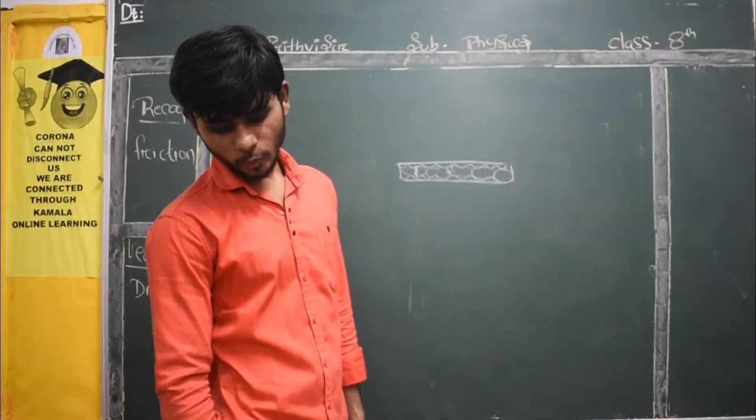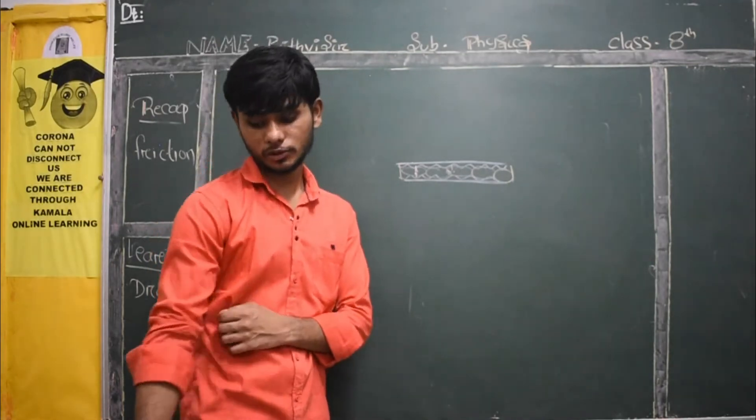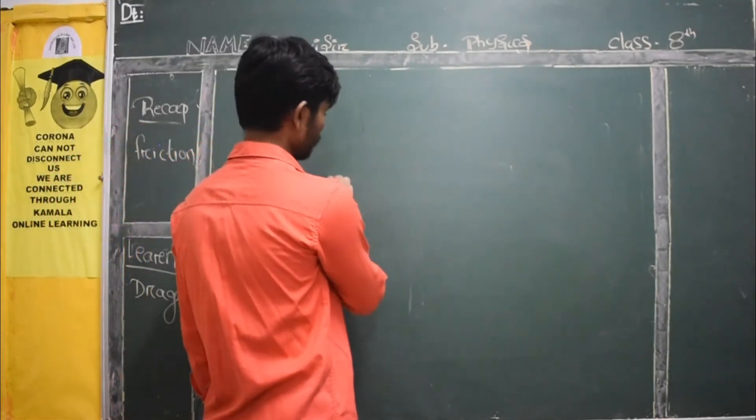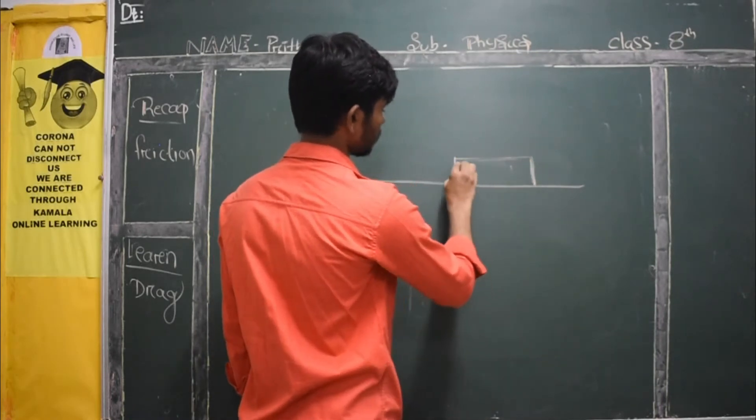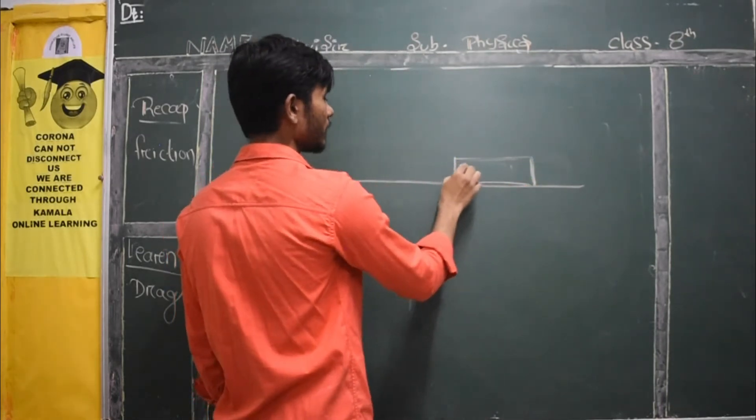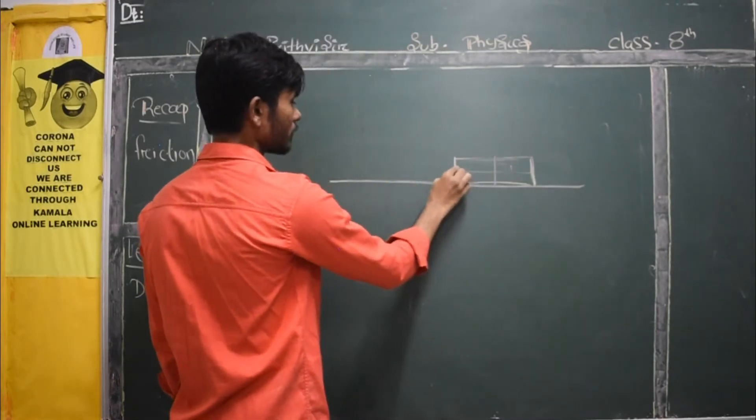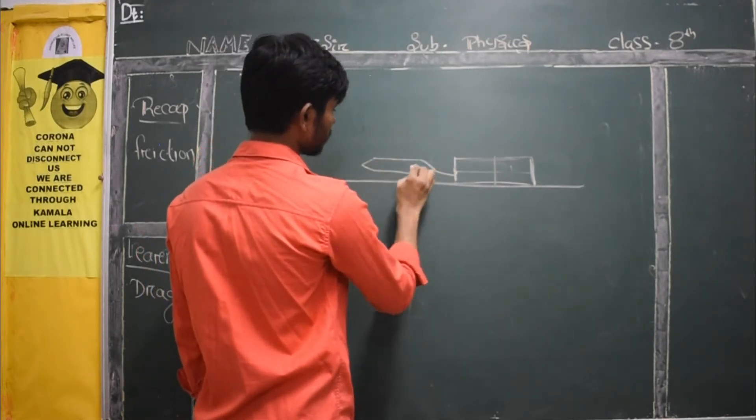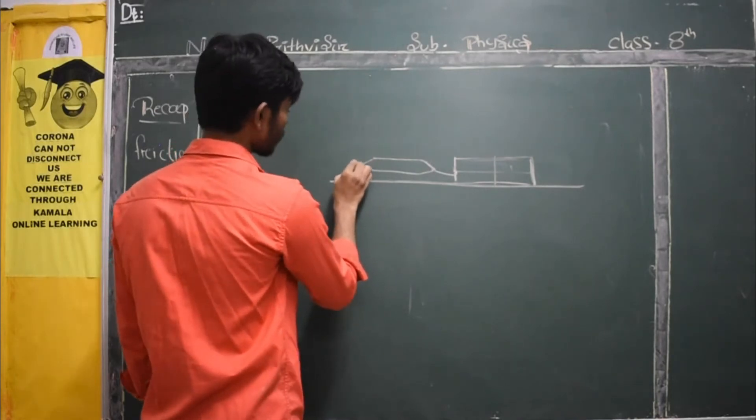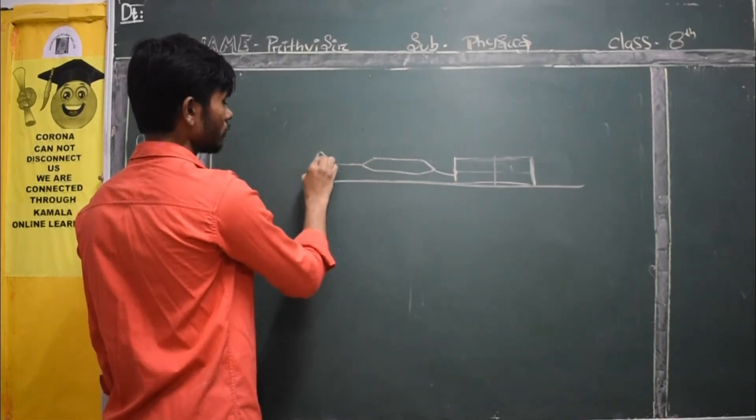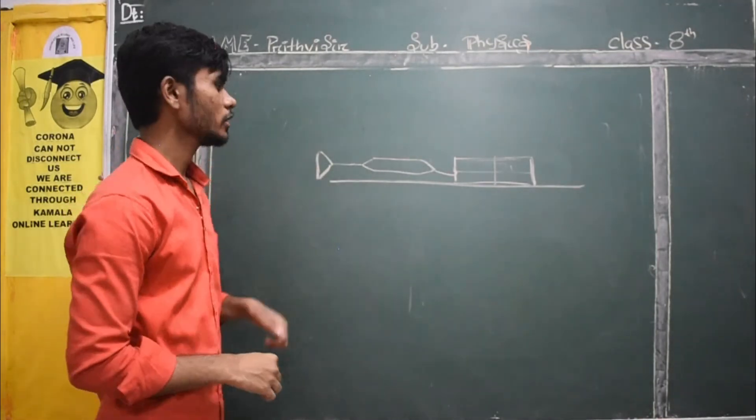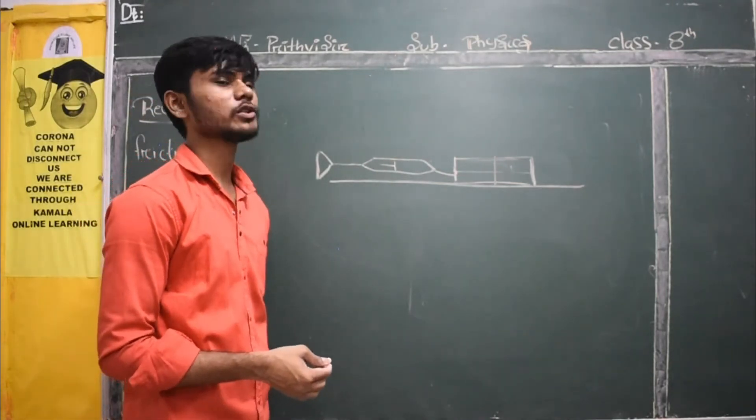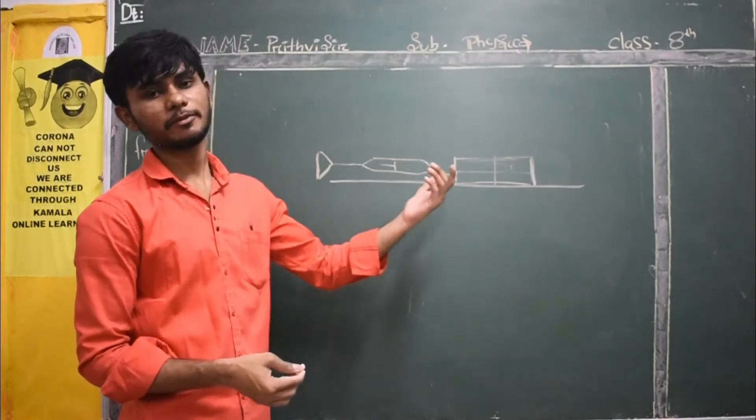Explain with one example that frictional force is proportional to the normal force. One example you will give. You will keep one brick. You will tie this brick. And you will use the spring balance. What do you do? We will push it. We will pull it. Suppose, here the spring balance and so on. How much force has been applied. And those force will be what? The more is the force, the more is the friction. That's what we need to understand.